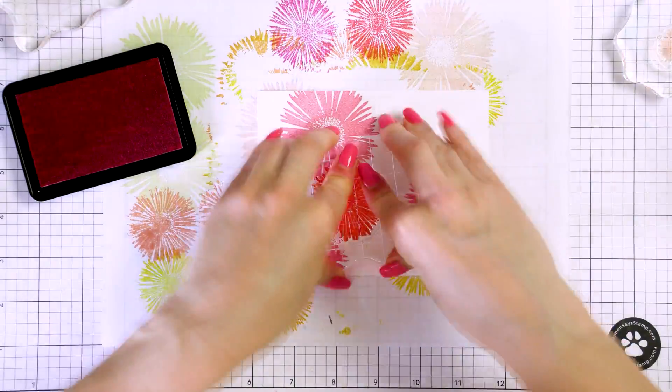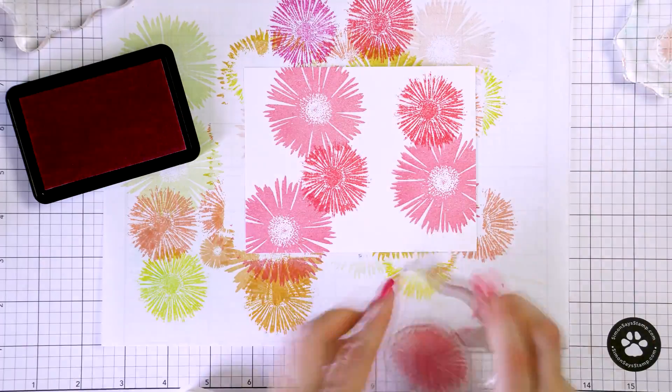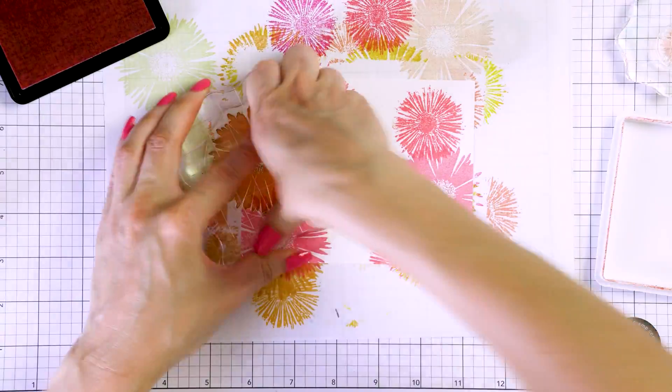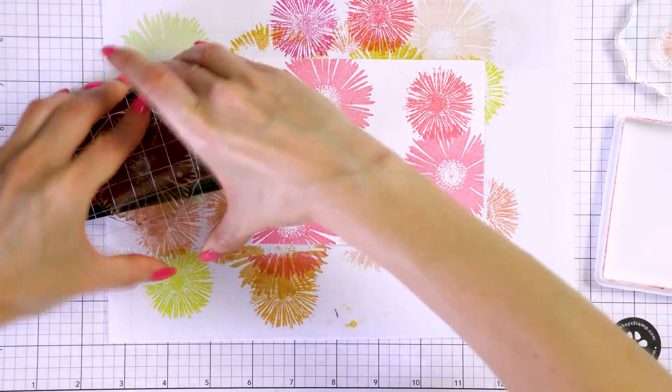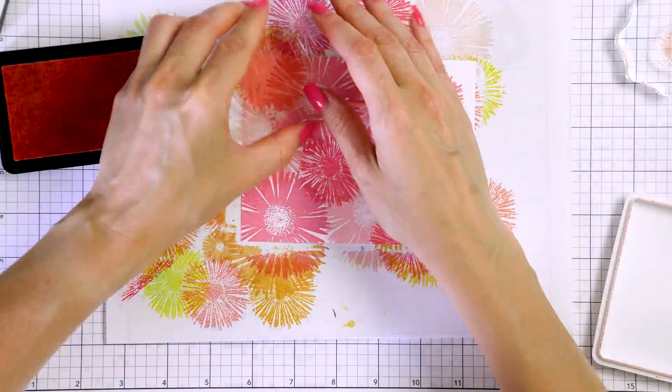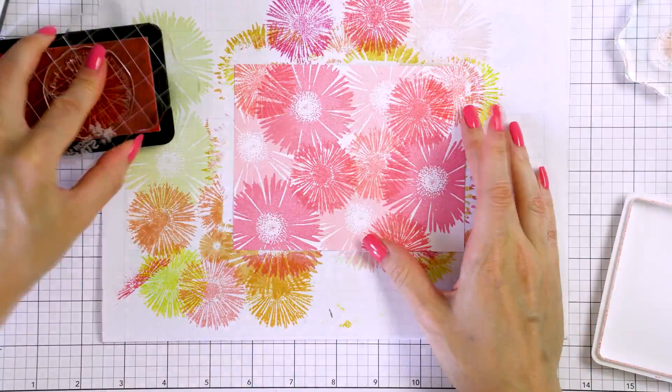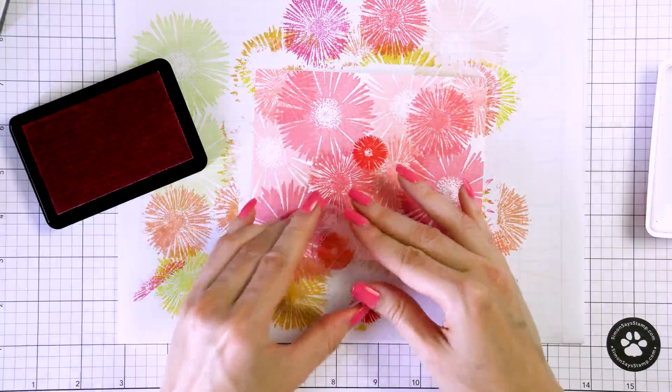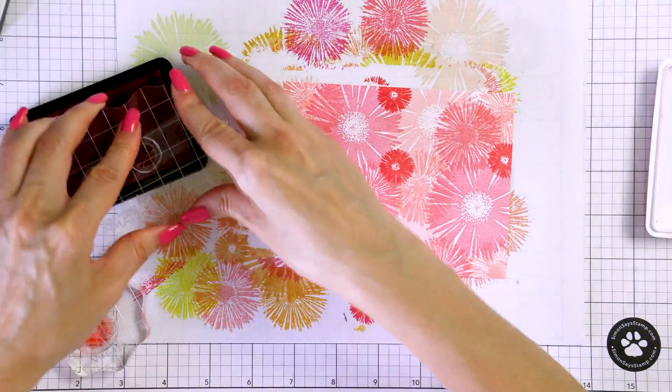These flowers look really phenomenal and you can also layer them. You can stamp the medium sized flower over the large one in a slightly different darker color of ink to have a dimensional flower. Or you can use the smallest flowers as flower centers and I'm yet to explore stamping that.